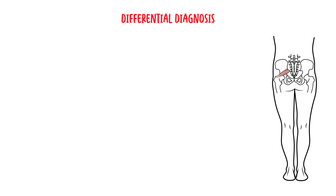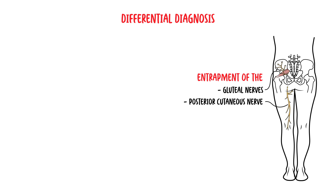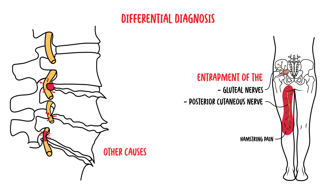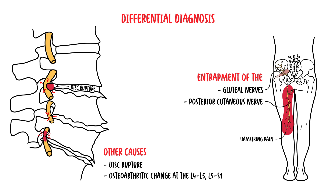There are a few differential diagnoses to consider. Firstly, entrapment of the gluteal nerves can cause similar pain. Entrapment of the posterior cutaneous nerve of the thigh can also cause hamstring pain. You also need to think about other causes of sciatica. Sciatica is a common term for a number of back and leg symptoms associated with the sciatic nerve, and the most common cause is actually a disc prolapse or rupture and osteoarthritis within the lumbosacral spine.